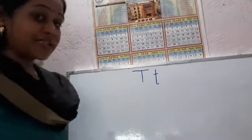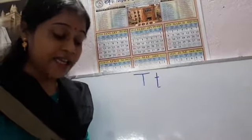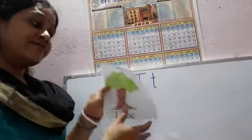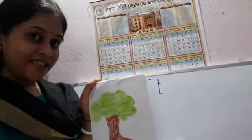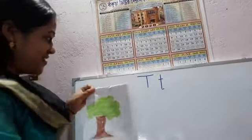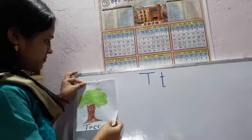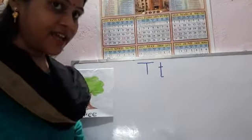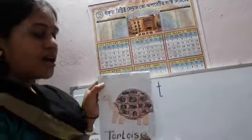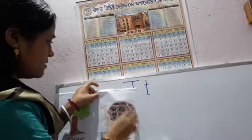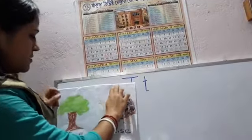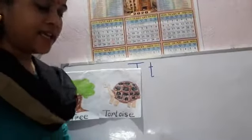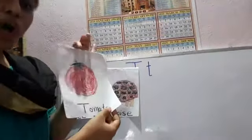The sound of T is: T, T, T. Tree. T, T, T. Tortoise.